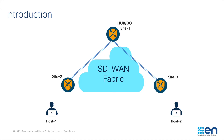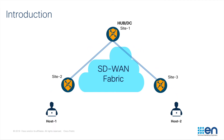In this way, the traffic from one site to another site gets routed through the hub location. This is where the dynamic on-demand tunnel comes into picture.